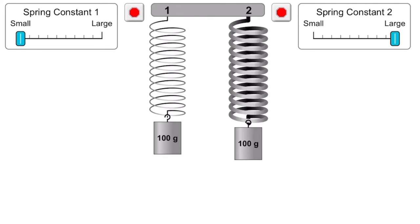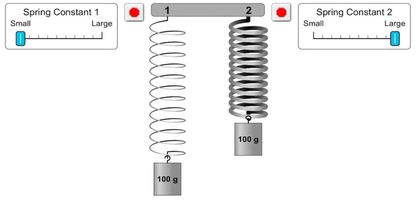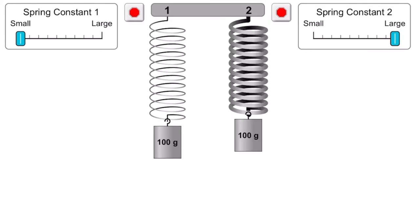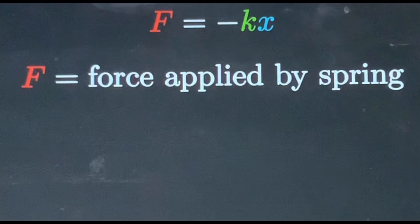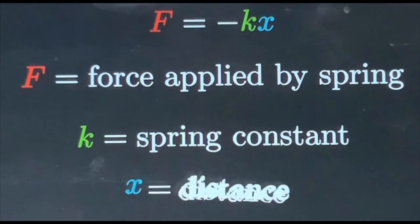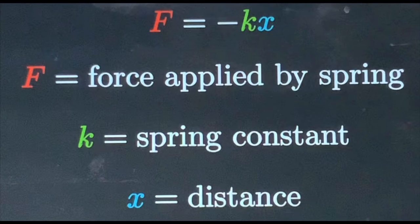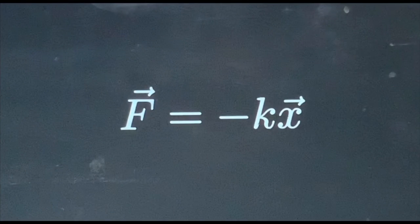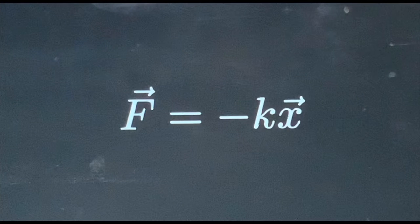In fact, scientists have been able to describe this relationship. This is called Hooke's Law. Mathematically, Hooke's Law can be written as F = kx, where F is the force applied by the spring after you release it, k is the spring constant, and x is the distance that you pull or push the spring. Technically, both F and x are vectors, so the equation should look like F = −kx. The negative sign indicates that the force vector is opposite to the direction in which you push or pull the spring.